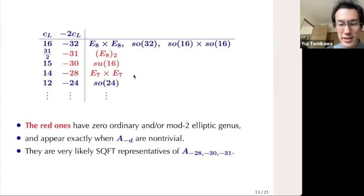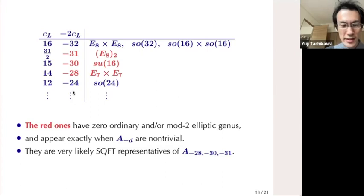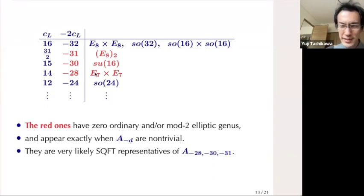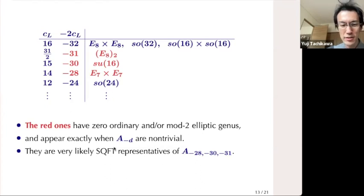It turns out that three red cases have zero ordinary and/or mod 2 elliptic genus — easy to check. And it is tantalizing that these three values of −2c_L appear exactly when A_{−d} is non-trivial. So the theory of topological modular forms and the Stolz-Teichner conjecture predict interesting supersymmetric QFTs which are non-trivial but have zero ordinary or mod 2 elliptic genus. It is very likely that these three cases are actually SQFT representatives, in the sense of the Stolz-Teichner conjecture, of these elements.